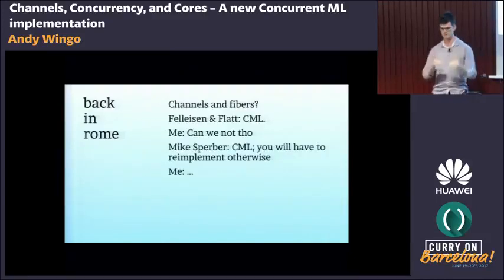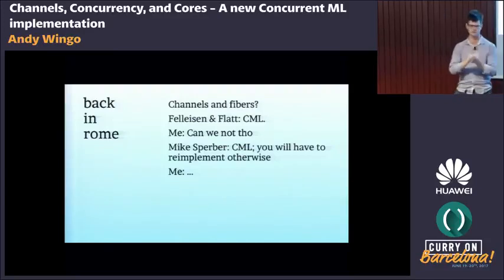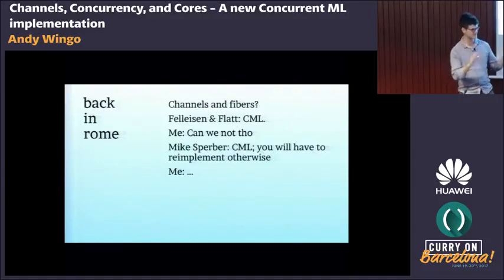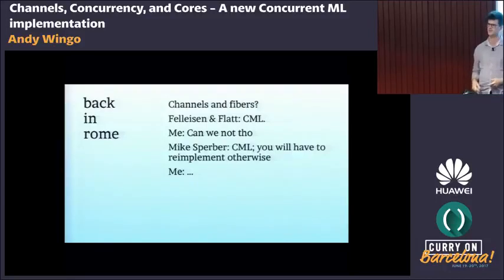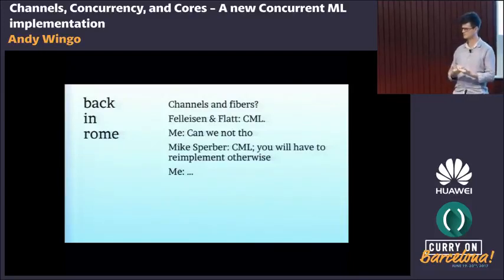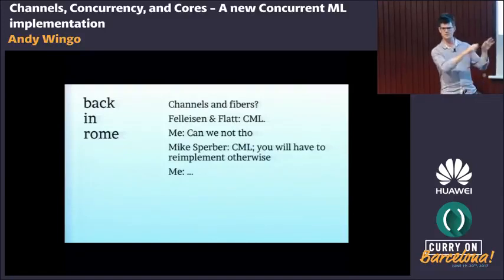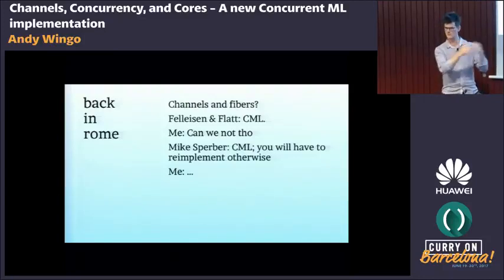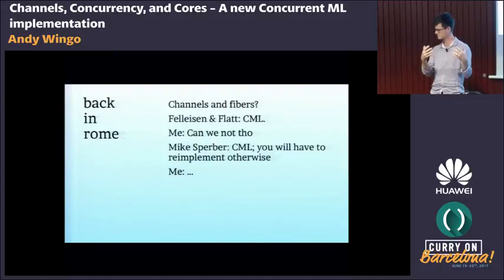So I had a lightweight threading system built on top of the language using these primitives. Then came CML. The day after — Curry On is two days — Felleisen and Flatt told me to look at CML. I asked: can I just implement channels? I have fibers; when they block on IO they suspend — but how do I make them communicate with each other? Is channels the right thing?